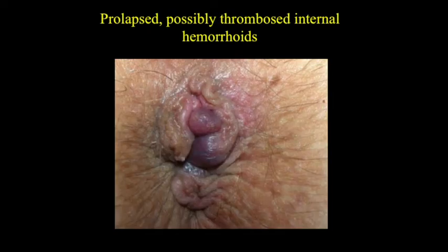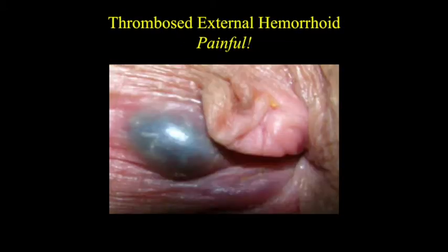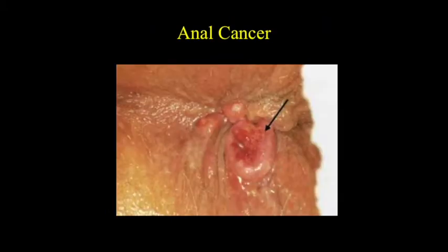This is a photograph showing a prolapsed internal hemorrhoid and surrounding external hemorrhoids. Here you see a thrombosed external hemorrhoid — these are very tense and very tender. Here is an anal cancer that could easily be missed.